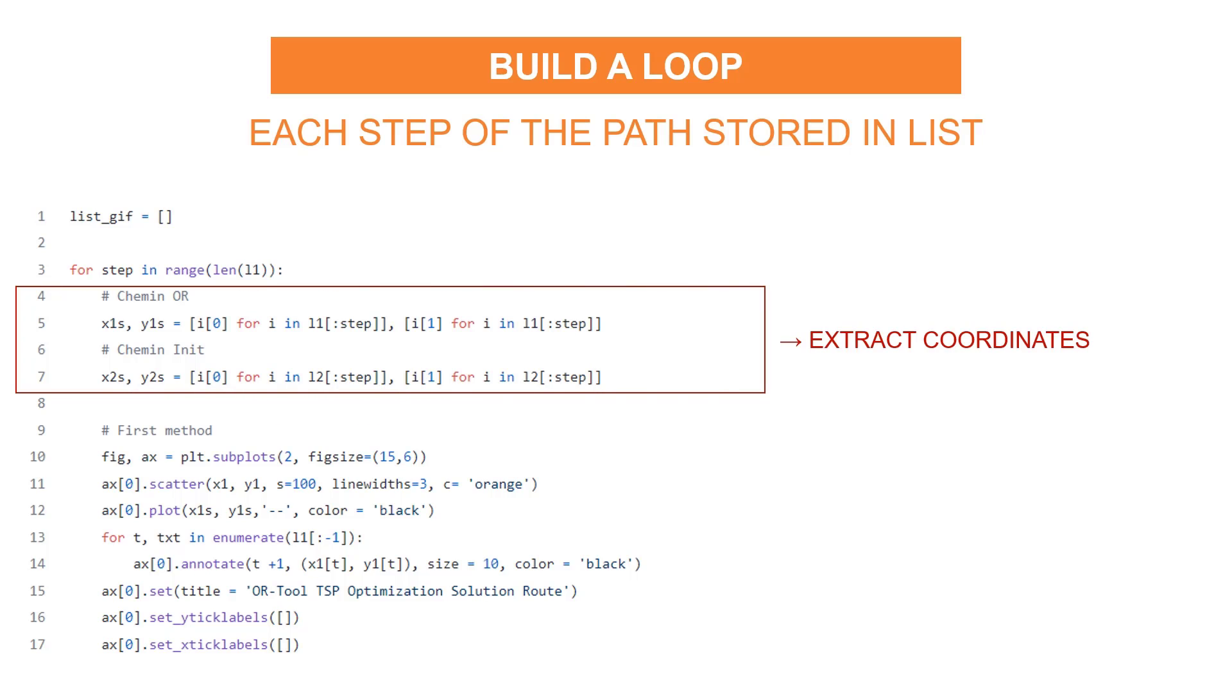You start by extracting the coordinates and split them in four lists, x-axis, y-axis for the two algorithms. You can see that the extraction is stopping at step. So you are truncating the list to generate this partial or intermediate plot. Now that you have the coordinates, you can start to plot the first graph.